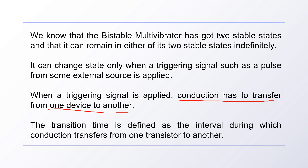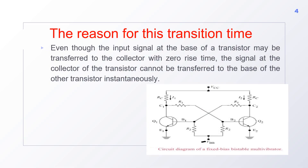That time is called transition time, and it is defined as the interval during which conduction transfers from one transistor to another. Even though the input signal applied at the base of the transistor may be transferred to the output — that is, to the collector of the transistor — within zero time.